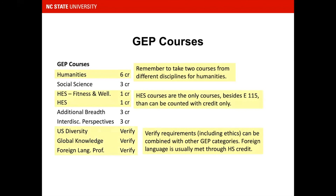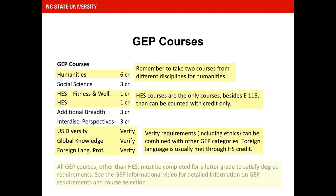Refer to the Understanding GEP Categories video for a more detailed explanation of verify requirements. The foreign language requirement is usually met through high school credit or completion of an associate's degree from the NC Community College system. All GEPs other than HES must be completed for a letter grade to satisfy degree requirements.